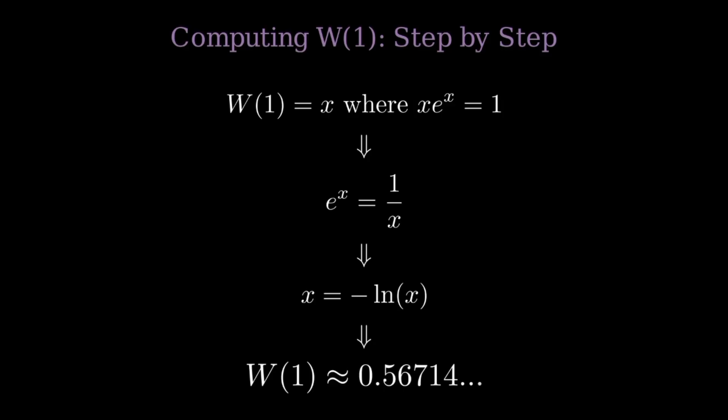This special number is so important it has its own name, the omega constant. Unlike simple algebraic numbers, this can't be expressed in terms of elementary functions. You need the W function to write it down exactly.